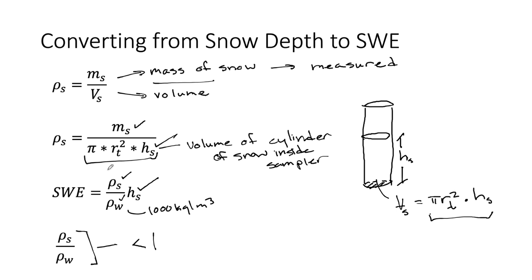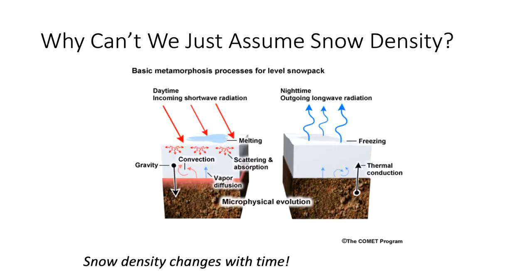You might ask: why can't we just assume snow density is constant? Old farmers might say 30 inches of snow gives about 3 inches of water — a baked-in assumption of 10%. But we can't assume constant density because the snowpack undergoes what the snow science community calls metamorphic or metamorphosis processes as it sits there. There are a couple of different reasons for this.